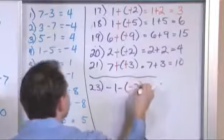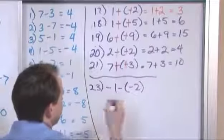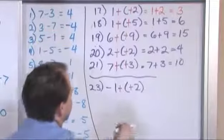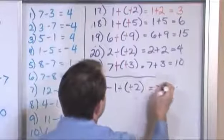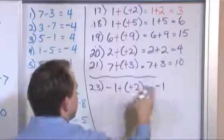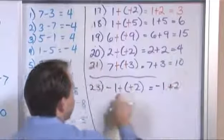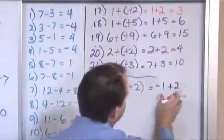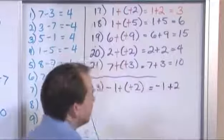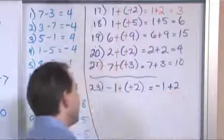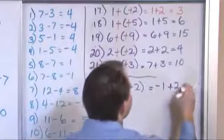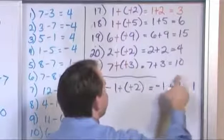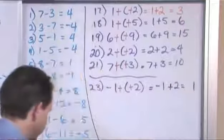Problem 22: negative 1 minus negative 2. It doesn't matter if the first number is negative — you handle it the same. These negatives are right next to each other, so we can add the opposite. So we're going to have negative 1 plus 2. Now, negative 1 plus 2 — they're different signs, so thinking back to the last section, we have to subtract them. 2 minus 1 is 1, and the sign comes from the larger absolute value, so it stays positive. You're going to have positive 1.